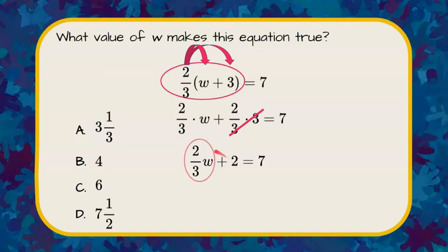Now we want to isolate the variable term. So we're going to do the inverse of add 2 and subtract 2 from each side. Here is our zero pair. So two-thirds W is equivalent to 7 minus 2, which is 5.